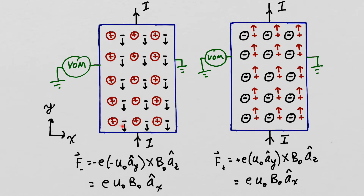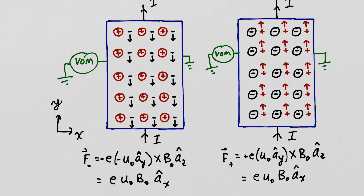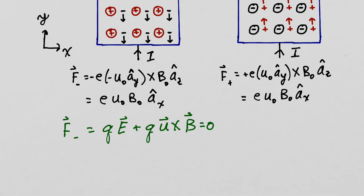If the only force these electrons experienced was the magnetic force, they would all pile up on the right-hand side of the gold. As the QU cross B force pushes the negative charges to the right, there builds up a Coulombic attraction between the non-mobile positive part of the atom and the negative charges. In steady state in the X direction, there will be a balance between the force due to the magnetic field and the force due to the electric field. The Lorentz force equation accounts for those two forces, so in steady state it will equal zero.